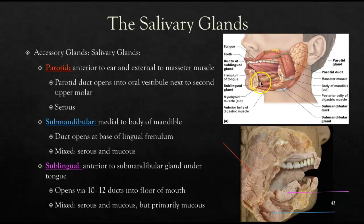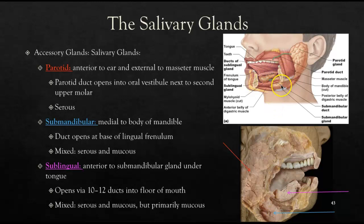The submandibular gland is also quite large, though not as large as the parotid. It is found medial to the body of the mandible. Its duct is located at the base of the lingual frenulum, and its fluid is a mix of serous and mucus.